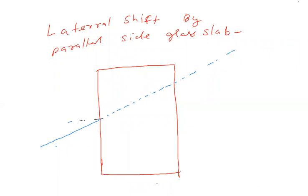यहां मैं normal draw कर लूँगा, तो यह ray अपने रास्ते से हलके से मुड़ते हुए यहां पहुंची। अब फिर एक normal बनाऊंगा यहां, और यह ray फिर यहां deviate होके ऐसे चली जाएगी। तो यह जो distance आ रहा है, यह D है — lateral shift।